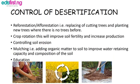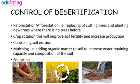Let's proceed to control of desertification. Number one, we have reforestation — that is the planting of trees to replace those cut down, which is the opposite of deforestation. We also have what we call afforestation, that is, planting of new trees where there were no trees before. We also have crop rotation, which will improve soil fertility and increase productivity.